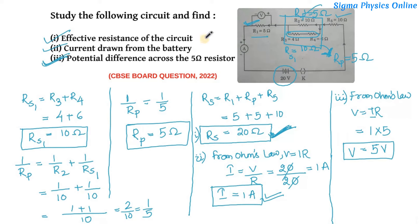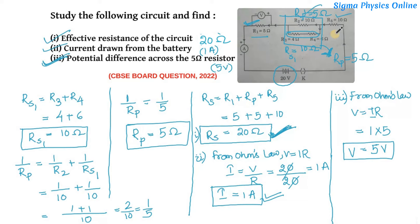So these are the answers to this question: the effective resistance of the circuit is 20 ohm, the current drawn from the battery is 1 ampere, and the potential difference across the 5 ohm resistor is 5 volt. In this way we can solve this question.